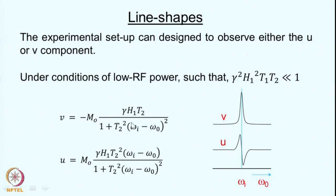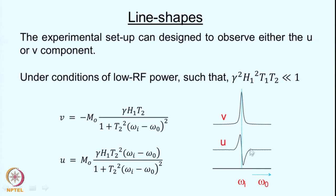These expressions represent the line shapes we observe. Plotting the V component as a function of the RF frequency ω₀ (which we vary, since the precessional frequency is fixed by the nucleus and the magnetic field) gives an absorption line. The U component gives a dispersive line shape with a positive component, a negative component, and a long tail.